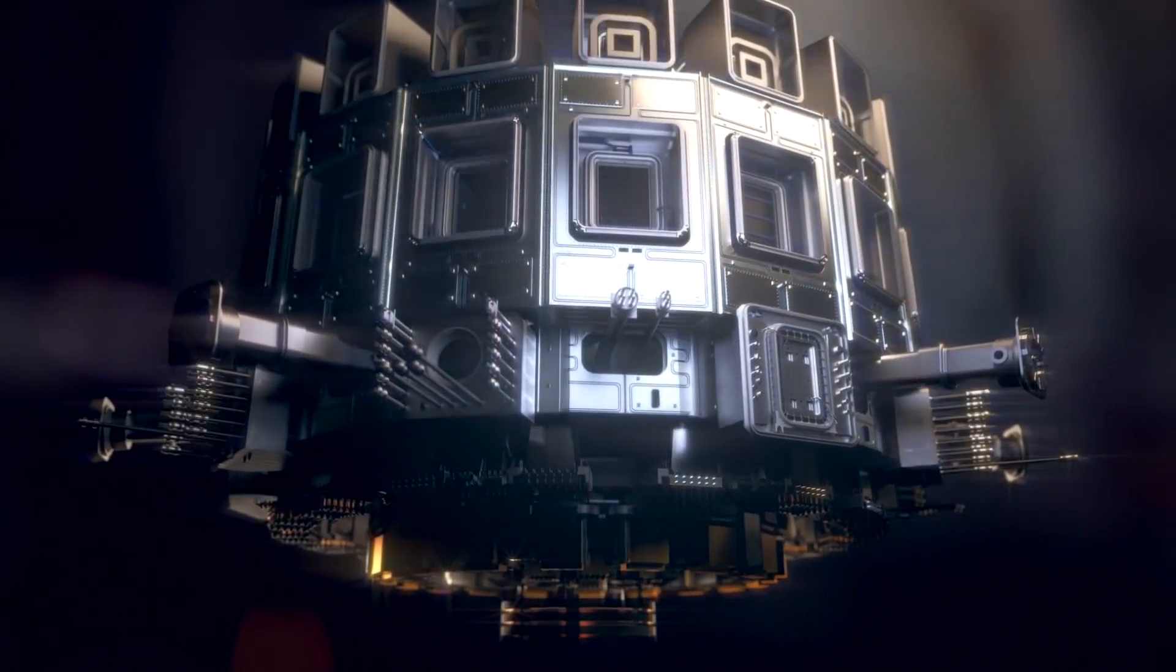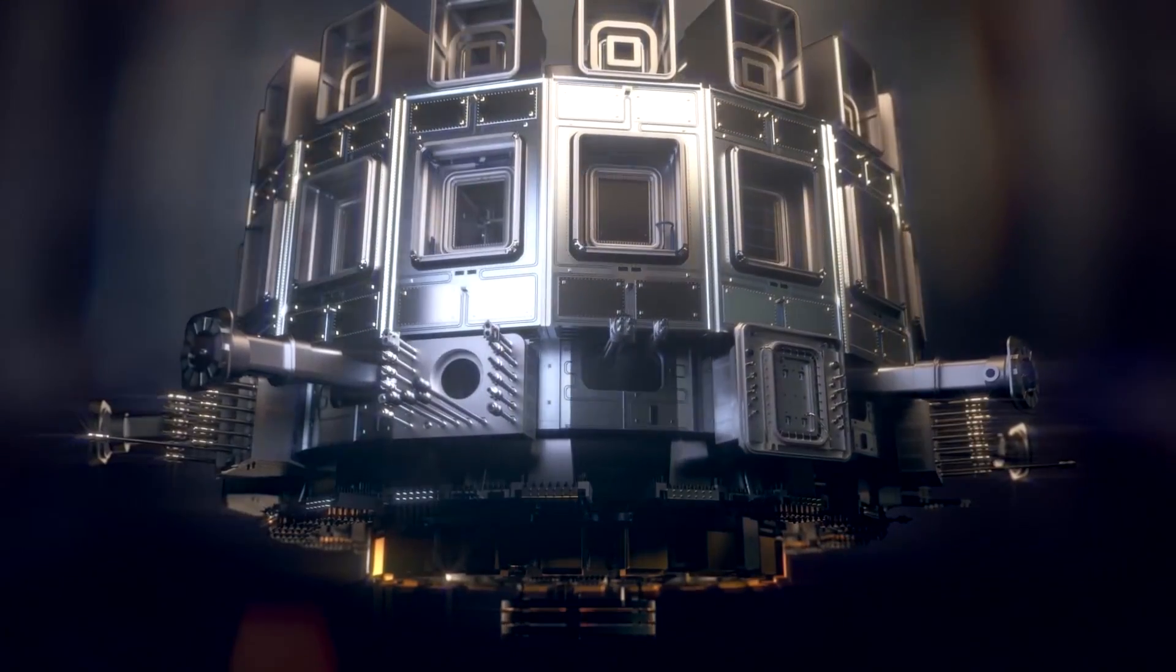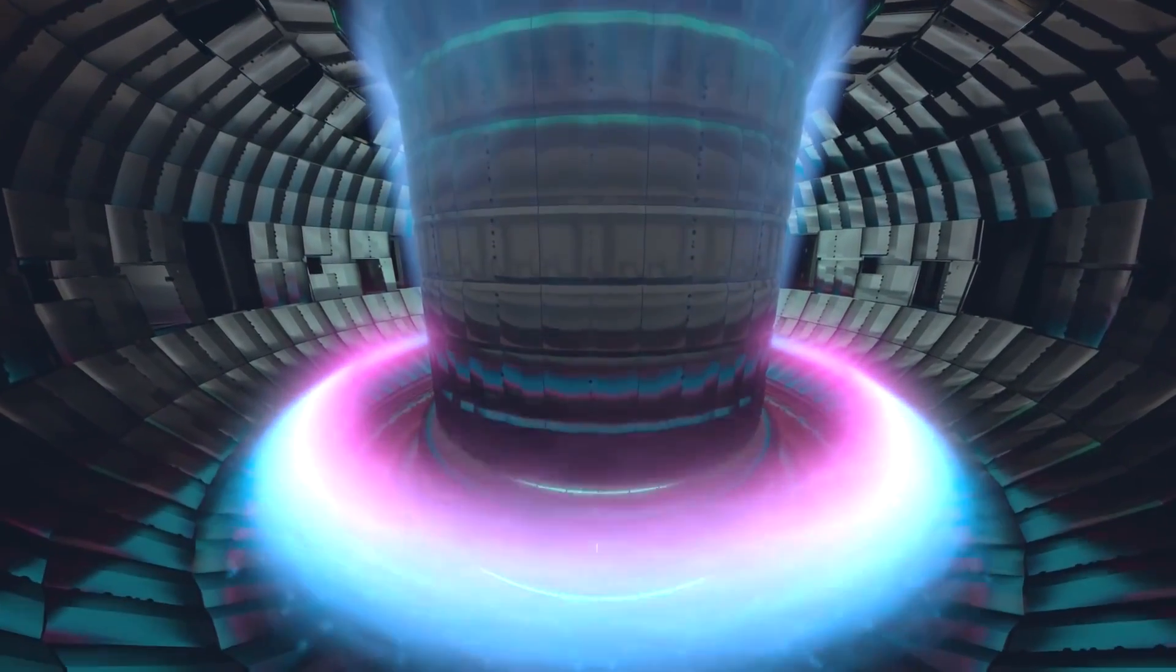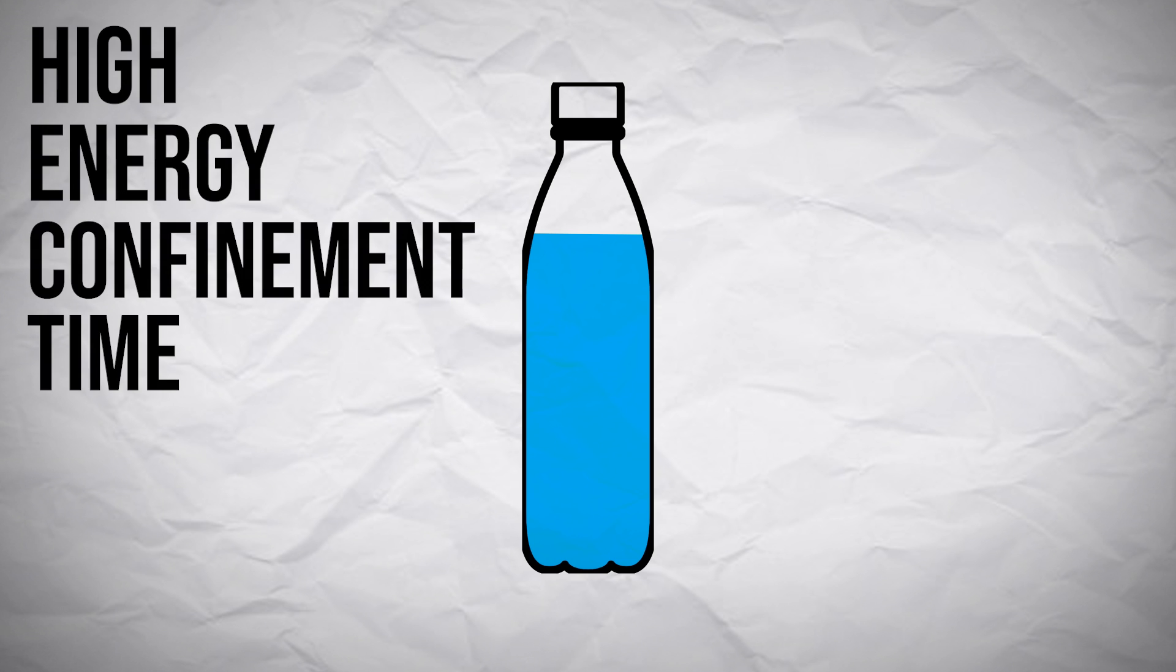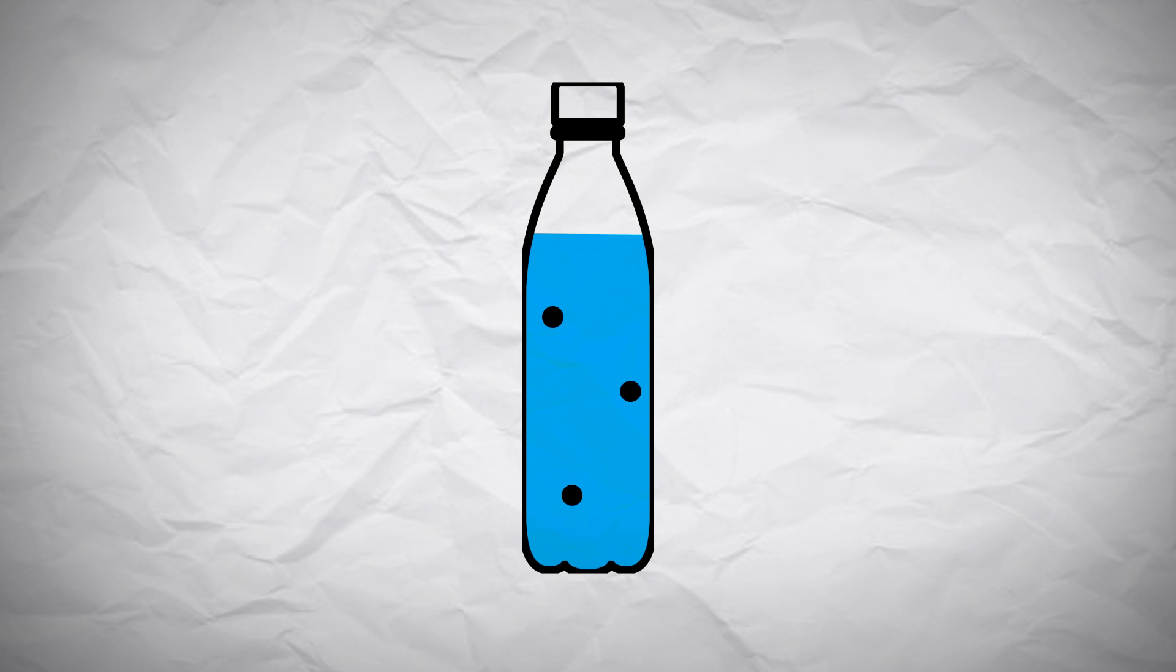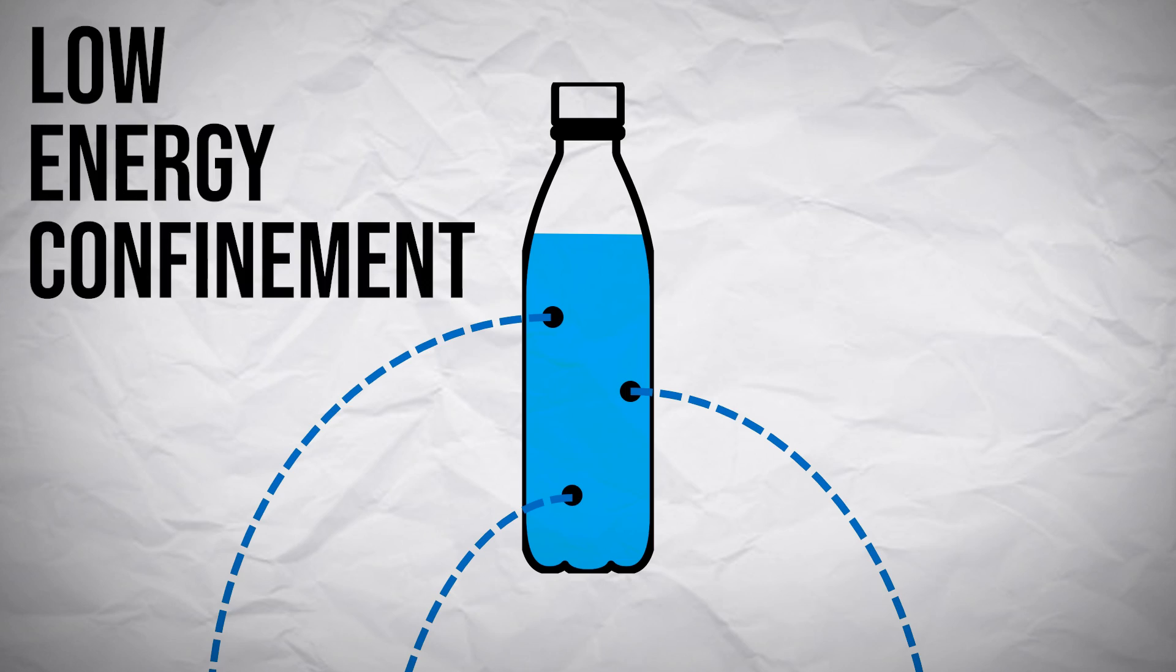This confinement quality is measured by the energy confinement time, and represents how quickly the plasma loses energy to its environment. The analogy of this is that if the nuclear reactor was a bottle of water, it would have a high energy confinement time if it was good at keeping the water in. But if it had lots of holes in it and was leaky, it would have poor energy confinement, or a low energy confinement time.